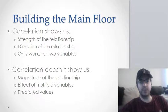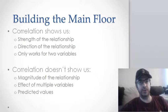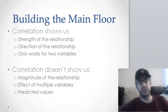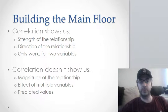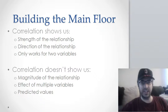A quick recap: correlation teaches us the strength and the direction of a relationship between two variables — that's it. If it's positive, as one variable goes up the other goes up; if it's negative, as one goes down the other goes up. Correlation only works for two variables — it's bivariate. It doesn't show us the magnitude of the relationship, it doesn't show us the effect of multiple variables together, and it can't give us predicted values.